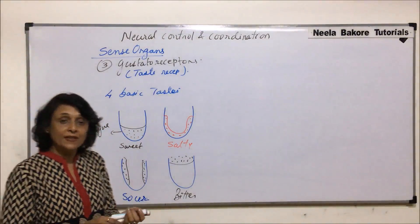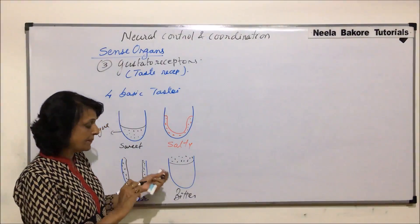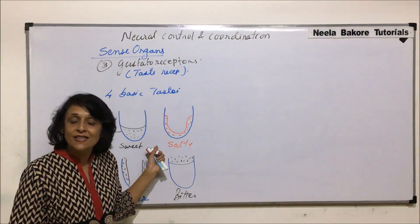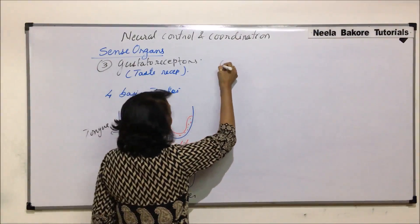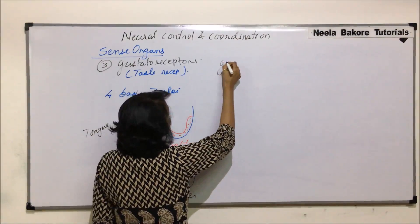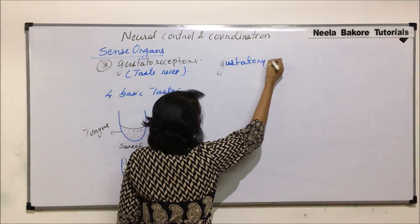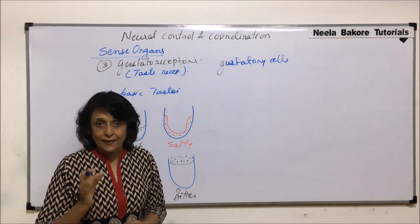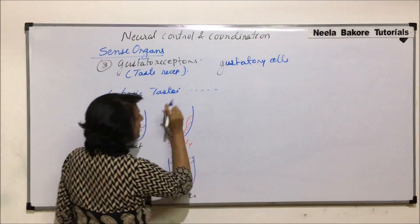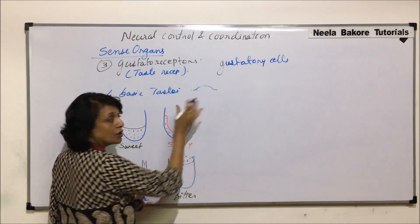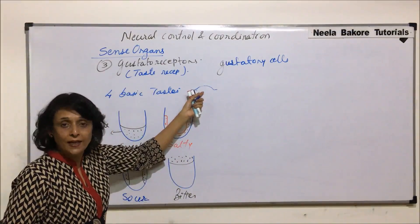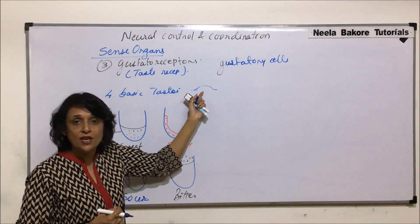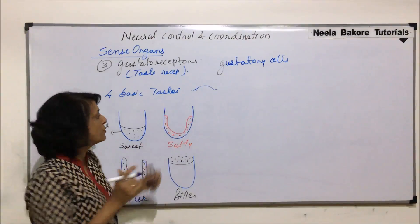These gustatory receptors — the actual cells which help us perceive these substances — are known as gustatory cells. They are located on the tongue, on structures called papillae. If this is the surface of the tongue, we find certain bulgy structures known as papillae. There are three types of papillae, which we have discussed in the structure of the tongue in the digestive system when we were talking about digestion.